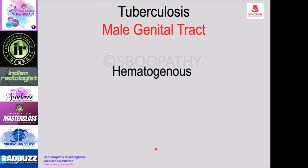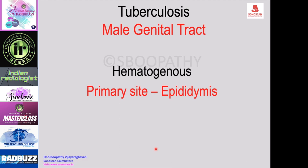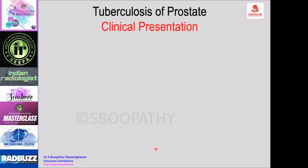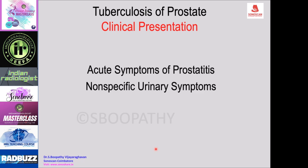In the male genital tract, spread is hematogenous and the primary site of involvement is the epididymis, with contiguous spread to other areas by direct spread. Clinical presentation can be acute symptoms of prostatitis or more commonly non-specific urinary symptoms. Subfertility occurs in about 10% of cases due to tuberculosis.